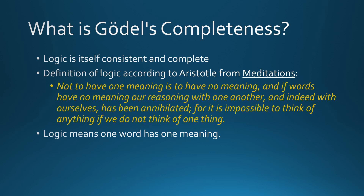Therefore, completeness and incompleteness are tightly related concepts. If each word has only one meaning then the rational system is complete. However, since all real words have multiple meanings, each rational system is incomplete when it uses words with multiple meanings.